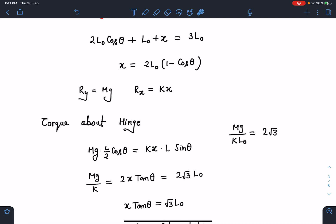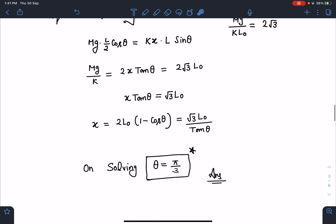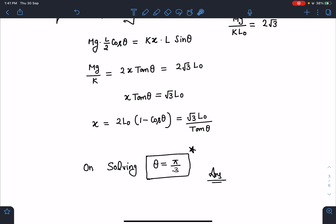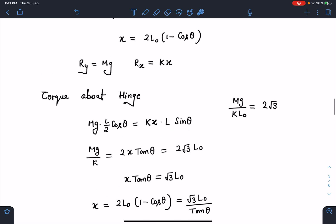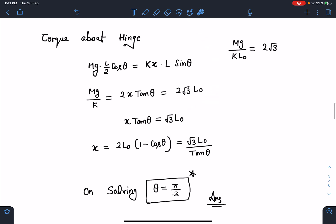Now you can use this relation given in this problem: mg/(kL₀) = 2√3. So from here you can see if I just rearrange these terms, x tan θ I am getting as √3 L₀. And this x value again substitute here. So when I simplify this, I'll get one equation in θ and on solving you can get θ = π/3, or you can just observe here π/3 is satisfying this. So this is the answer for first part.